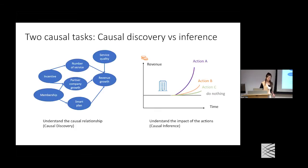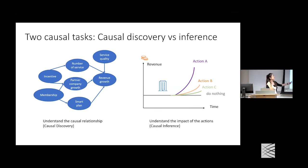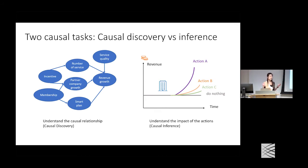In the research community, there are two common causal tasks. The first is causal discovery: given data, we want to understand the causal relationship — for example, does an incentive cause the number of services to grow? The output is commonly a causal graph. The second is causal inference: caring about what exactly happens as a consequence of an action — if we do something, what will change?